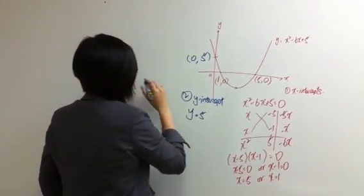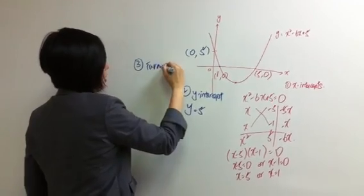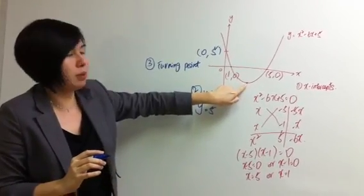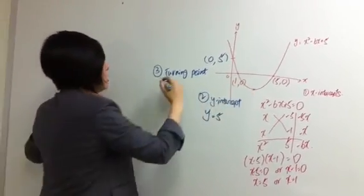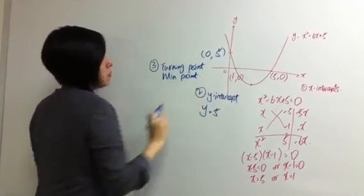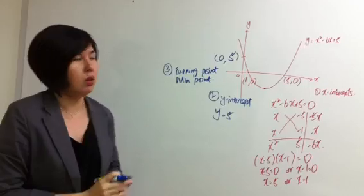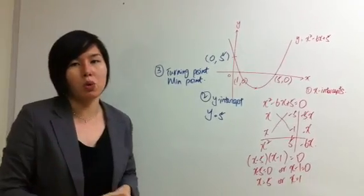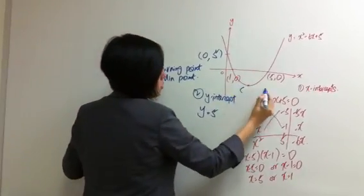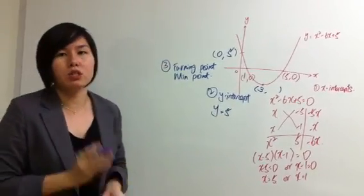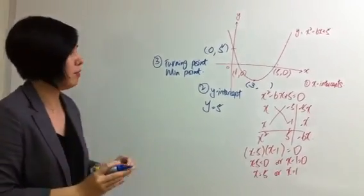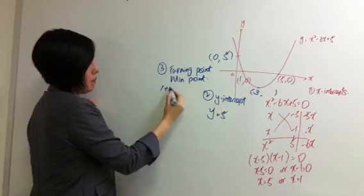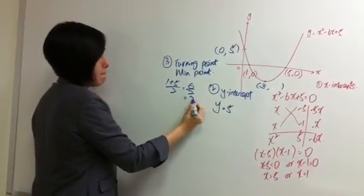The third feature is our turning point. For this happy-face-shaped graph, the turning point is the minimum point. To find the x-coordinate of the minimum point, we look at what number lies directly between our x-intercepts 1 and 5, which is 3. A quick formula: take the x-coordinates of both x-intercepts, add them together, and divide by 2 — you get the same answer.